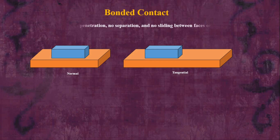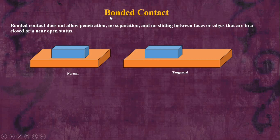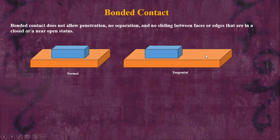Now let's discuss linear contacts. The first type is bonded contact, which is also the most widely used contact in finite element analysis. Bonded contact does not allow penetration, separation, or sliding between faces and edges that are in a close or near-open state. There is no relative motion between the contact and target body.